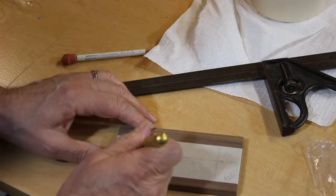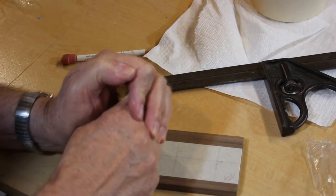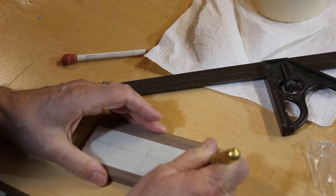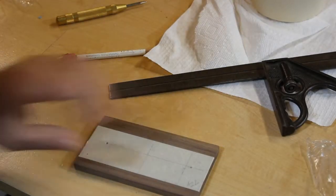And so I'm just going to take my center punch and mark where I want to drill my hole. And then I'll take it over to the drill press and drill my holes.